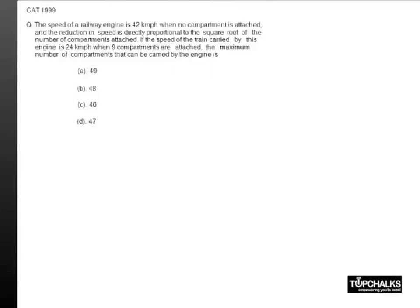This is a question based on the concept of direct relations. Here we find that the speed of the train is some constant k1 minus a reduction, and we know that the reduction is directly proportional to the square root of